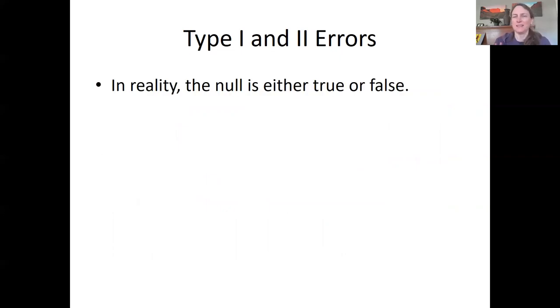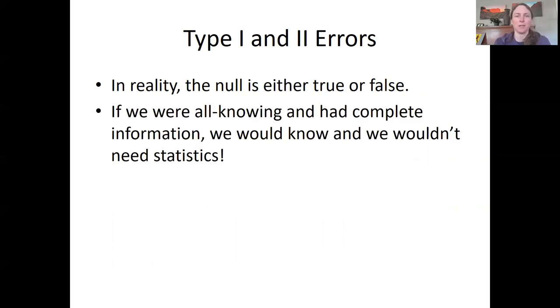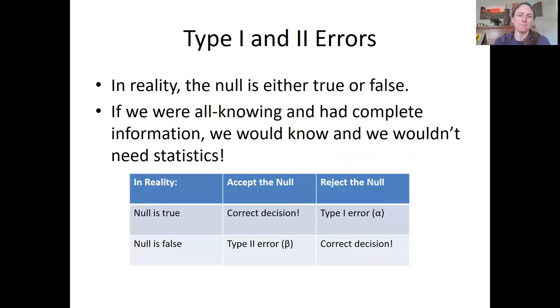And it's important to understand that in reality, whether we can know this or not, the null hypothesis is either true or false. So there's reality, there's truth out there. Now our job is to find it, right? So if we were all knowing and had complete information, we would just know whether there were more ant mounds in the field or in the forest. And we wouldn't need statistics, but we're not all knowing. So this table shows you in reality over here, the null is either true or it's false. But we don't know which it is.